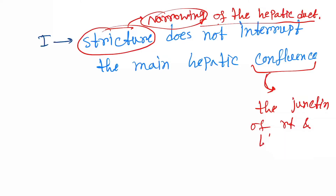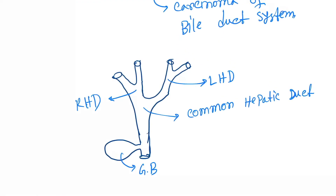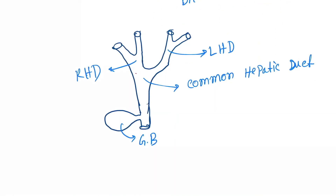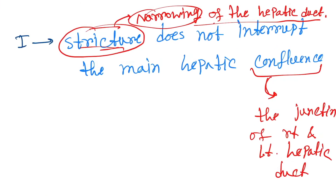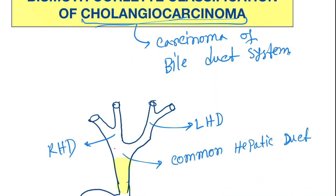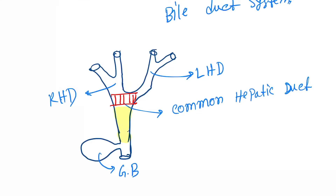So confluence is the junction between the right and left hepatic ducts, and stricture is the narrowing. In Category 1, the stricture is located below the main hepatic confluence — the confluence is not interrupted, because the stricture is in the common hepatic duct area only.